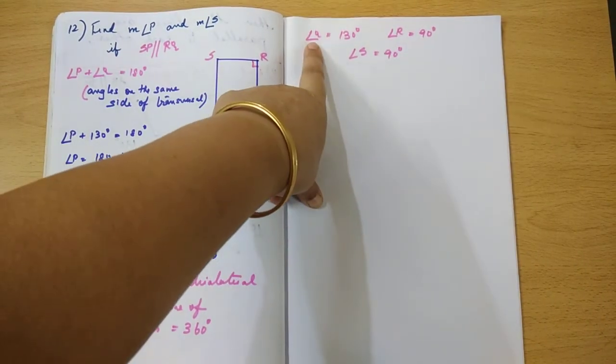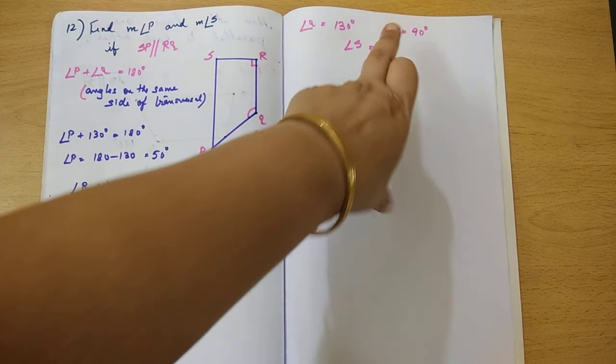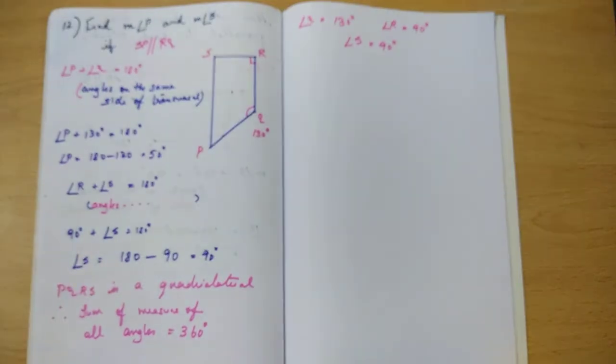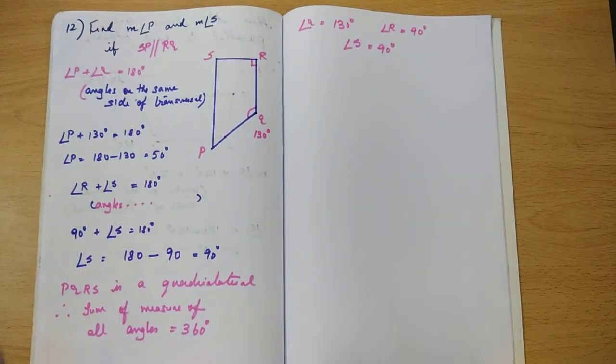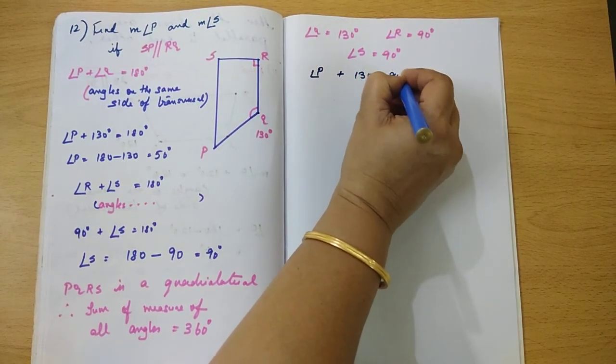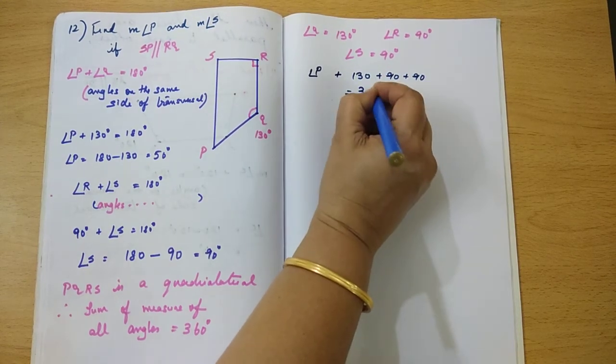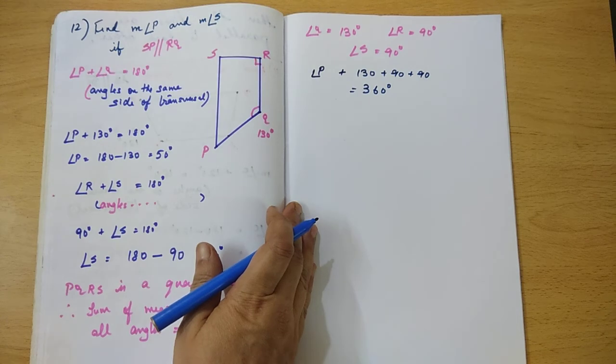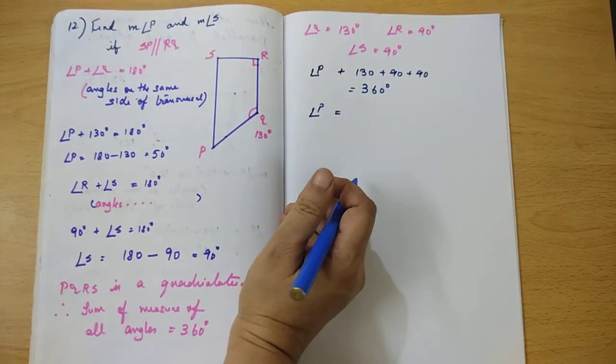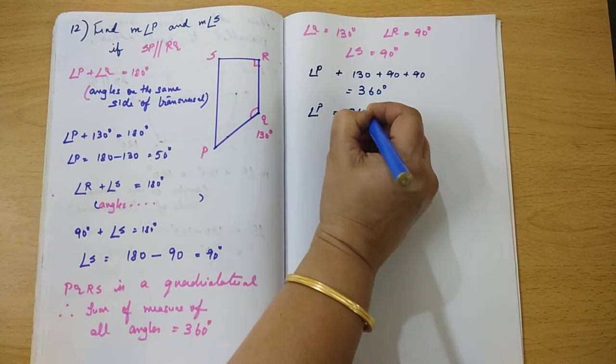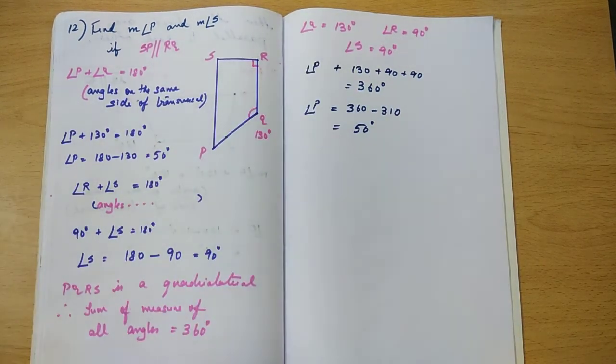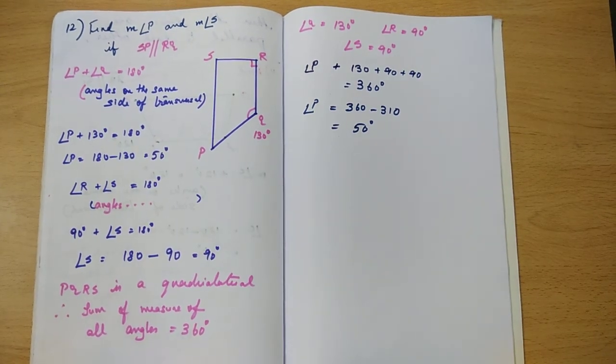Now what do we know? Angle Q is equal to 130 degrees, angle R is 90 degrees, and we have also found out that angle S is equal to 90 degrees. So, angle P plus 130 plus 90 plus 90 is equal to 360 degrees. If you sum all those angles, you get 310 degrees. So angle P is equal to 360 minus 310 is equal to 50 degrees. So there is one more way to find angle P if you know the other three angles.